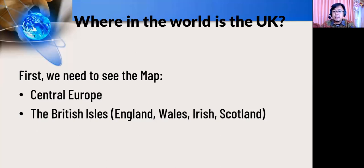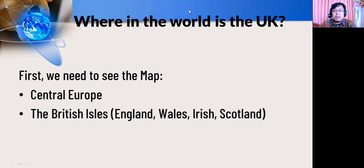Where in the world is the United Kingdom? First, we need to see the map of Central Europe. After that, we will discuss about the British Isles, especially England, Wales, Ireland, and Scotland. This is the Central Europe. We have here Germany, Poland, Belarus, Ukraine, Slovakia, Hungary, Romania, Croatia, Slovenia, Switzerland, Italy, Bosnia Herzegovina, Bulgaria, Netherlands, and Belgium. You need to differentiate between Belgium and Bulgaria because they are two different countries located in Central Europe.